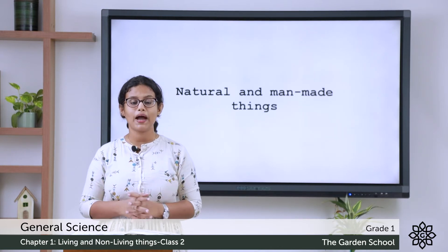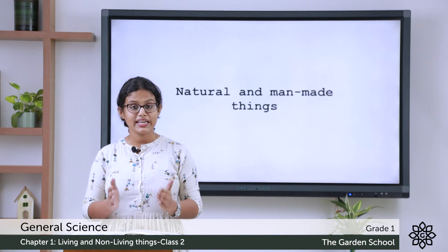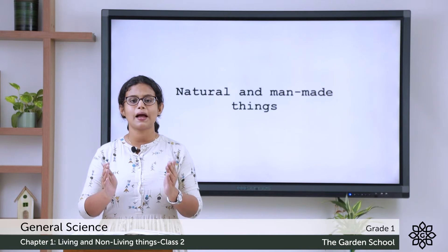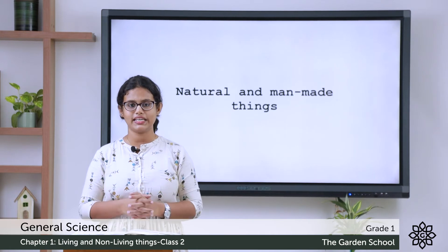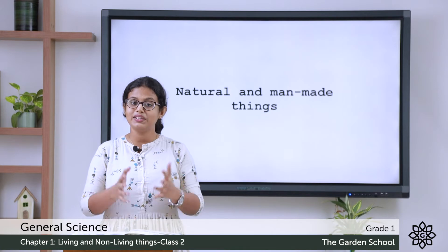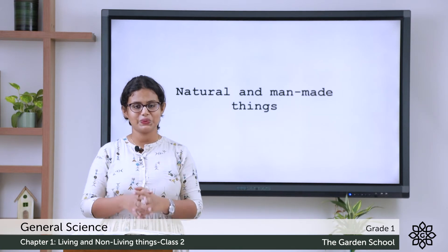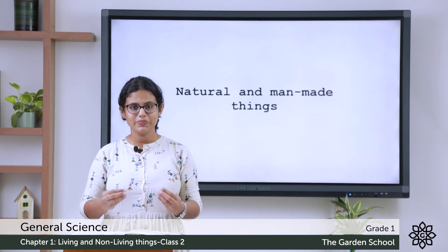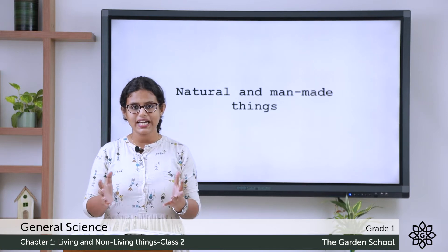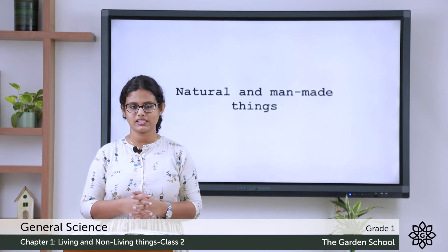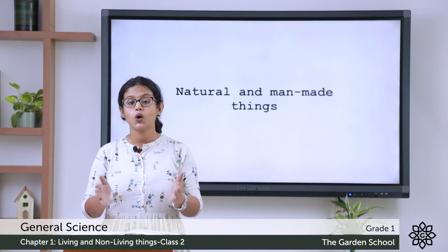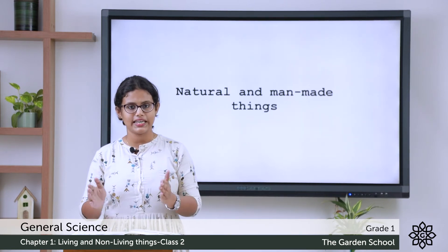Then what about man-made things? Things which are made by people we call man-made things. For example, the table — do we get a table directly from nature? No. We people make it according to our needs. So we call it a man-made thing.